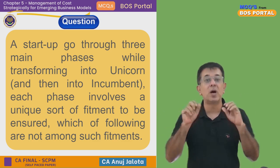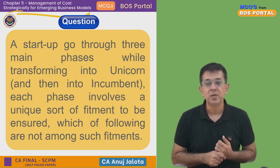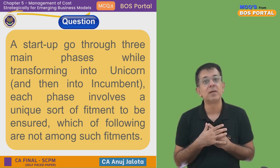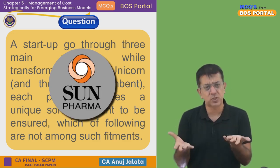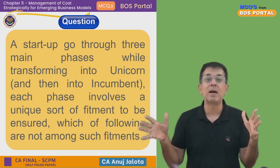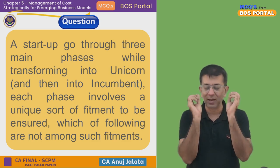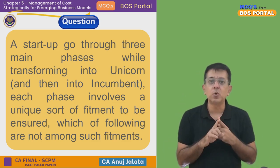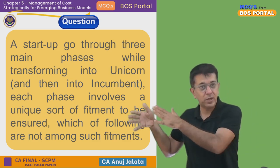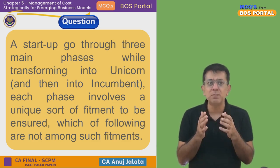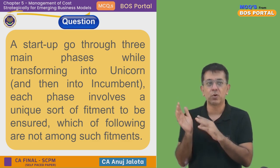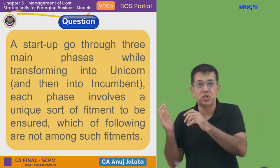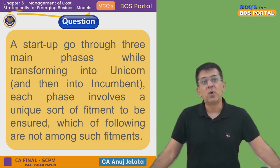Then the startup becomes an incumbent — an established company where there is no uncertainty regarding that company. For example, in India, in the pharmaceutical sector, a company like Sun Pharma is the largest player in its segment — it is an incumbent. If you want to invest in shares, Sun Pharma is a very less risky company. Same goes for Reliance — it is now an established, incumbent company. So from startup to unicorn is a big journey, and this drives the company further into becoming an established company.